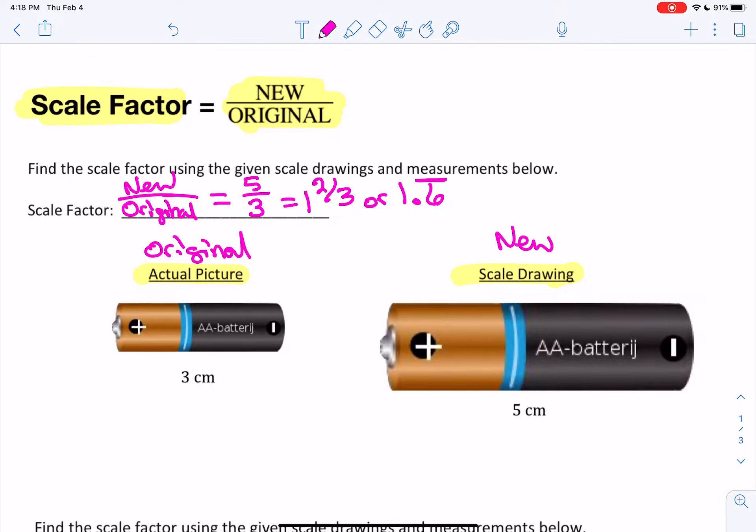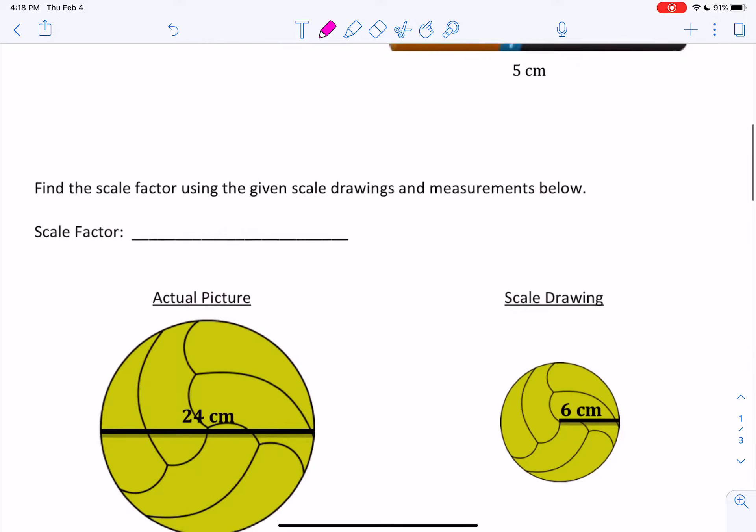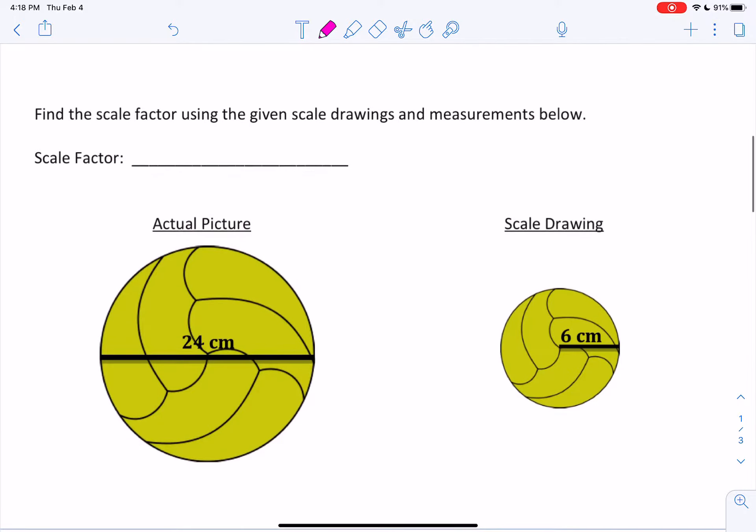Okay, let's take a look at another example. Here we have two pictures of volleyballs, right? And the first one is the actual picture of the volleyball. So this is going to be our original. And the second one is the scale drawing. So this is going to be the new.